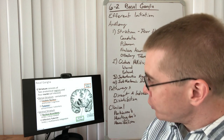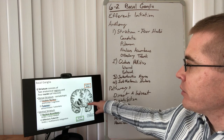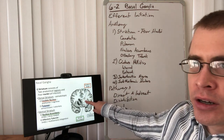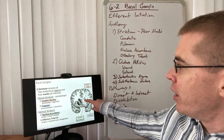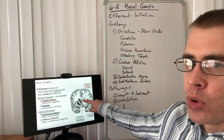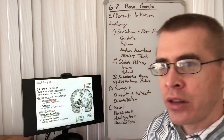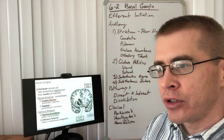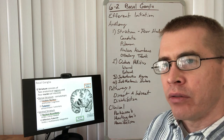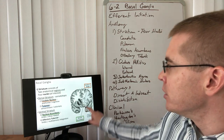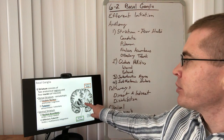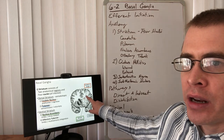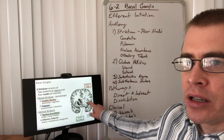The putamen is involved in voluntary sensory motor processes and motor output. We have the caudate more medially, on the border of the lateral ventricle, and separated by the internal capsule from the caudate is the putamen.